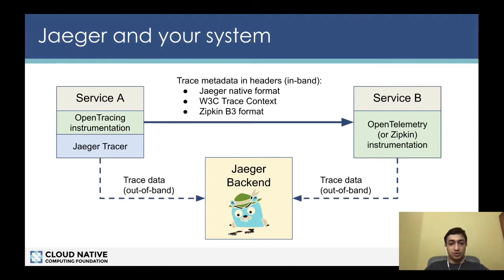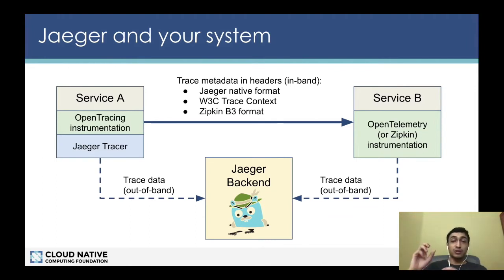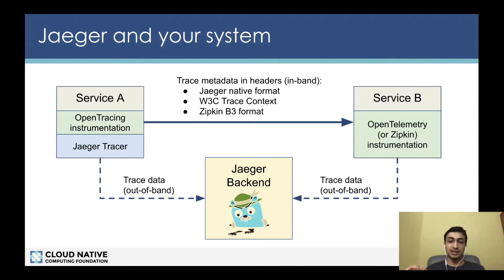This workflow shows what information is propagated as part of a regular HTTP call between services and how trace data reaches the Jaeger backend. When service A calls downstream service B, it adds instrumentation to insert the unique trace ID into the HTTP context headers and passes it to service B. Service B receives the request, parses out the context information, and uses the same trace ID in the spans it creates. Finally, span data emitted from both services reaches the Jaeger backend out-of-band, where it is stitched together to form a common trace.